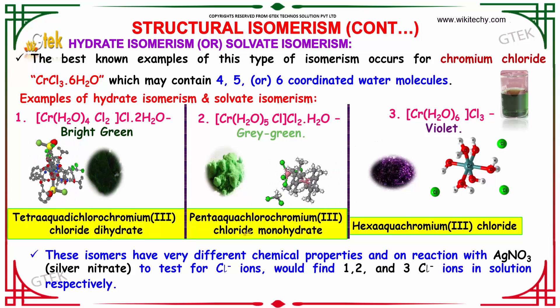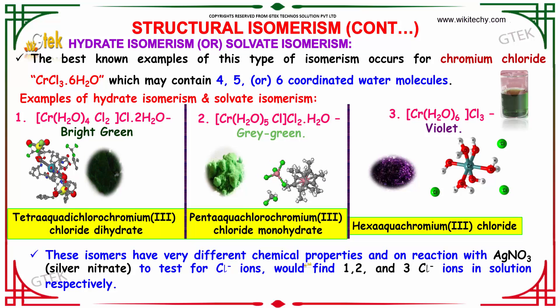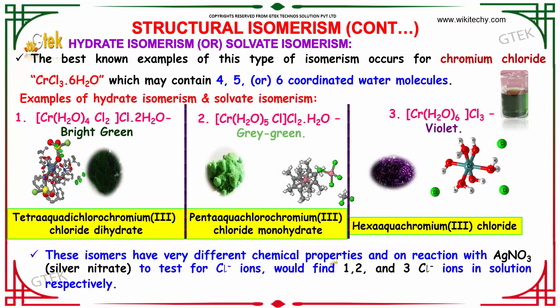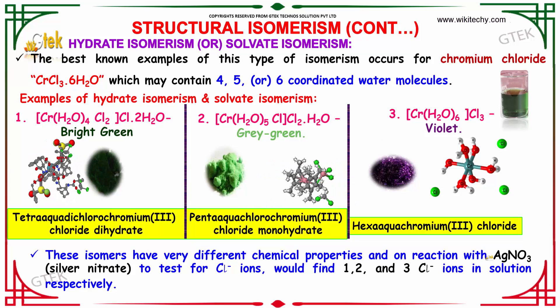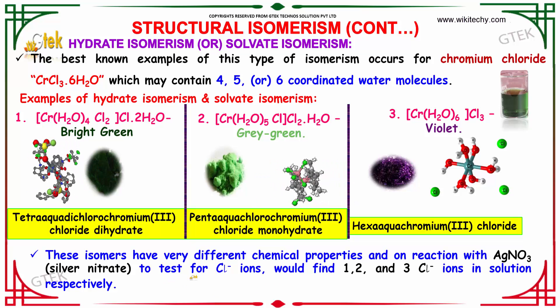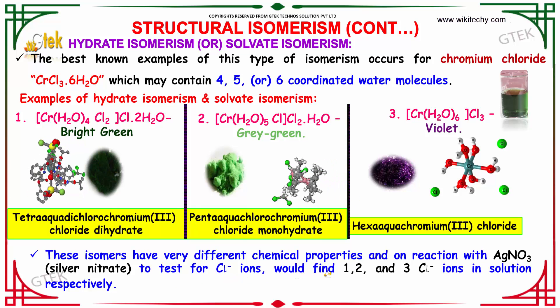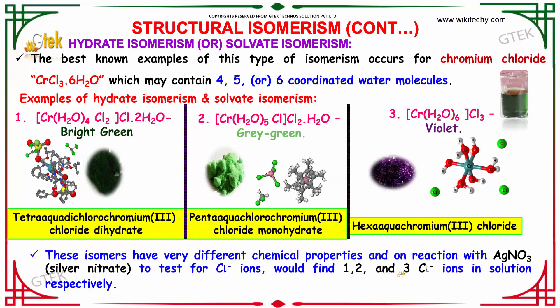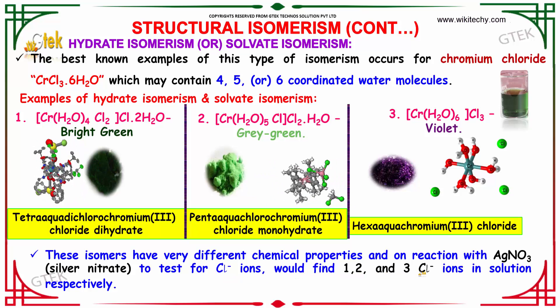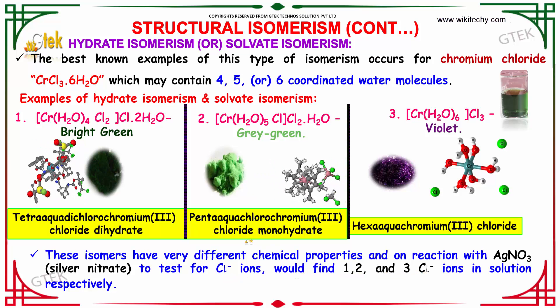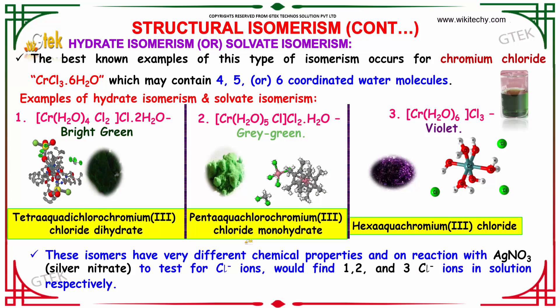These isomers have very different chemical properties. On reaction with silver nitrate, to test for chloride ions, you would find 1, 2, and 3 chloride ions in solution respectively.